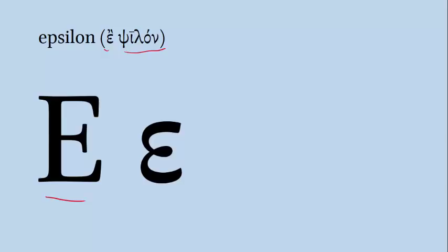Next we have the letter Epsilon. The name literally means 'simple E,' and Epsilon is always a short vowel — it never counts as a long vowel. The long form of Epsilon is represented by Eta, which we'll get to in a minute. Epsilon makes that short E sound as in the English word 'bet.' An uppercase Epsilon looks just like an uppercase E. For a lowercase Epsilon, I draw it like a backwards three — two loops starting at the middle of the line. An example of a Greek word with Epsilon is the verb 'pempo,' meaning 'I send.'